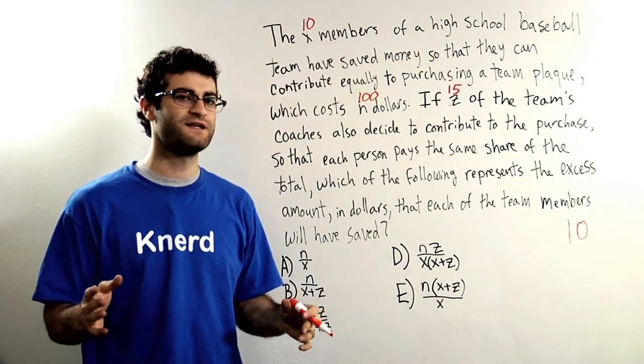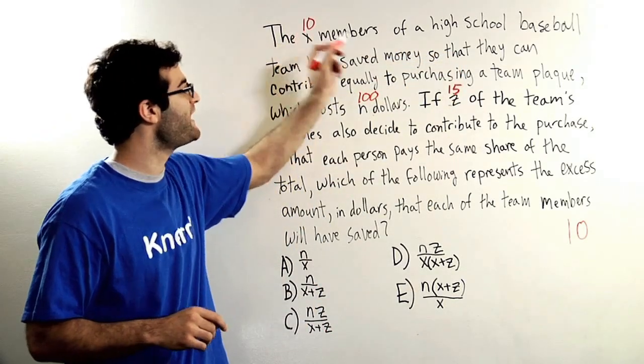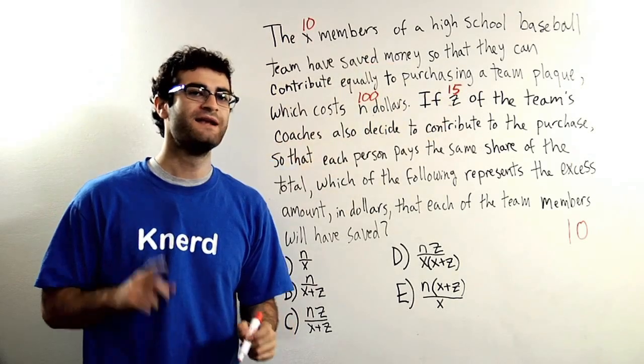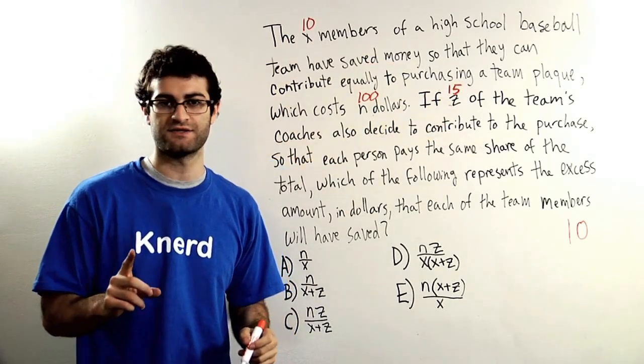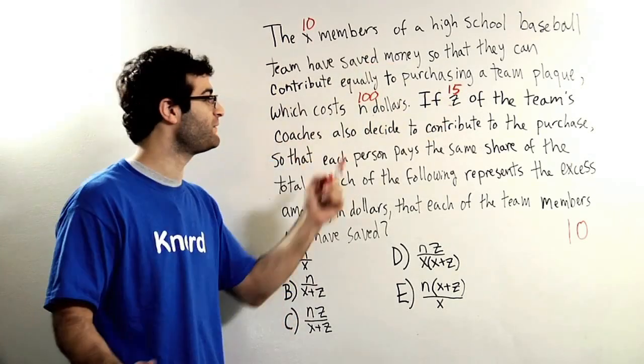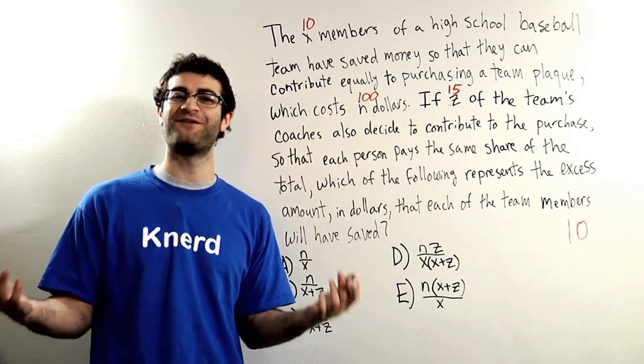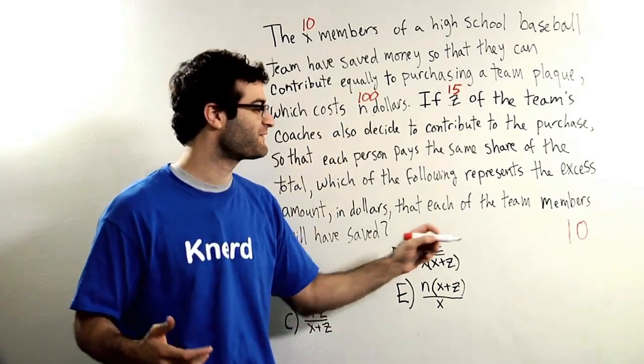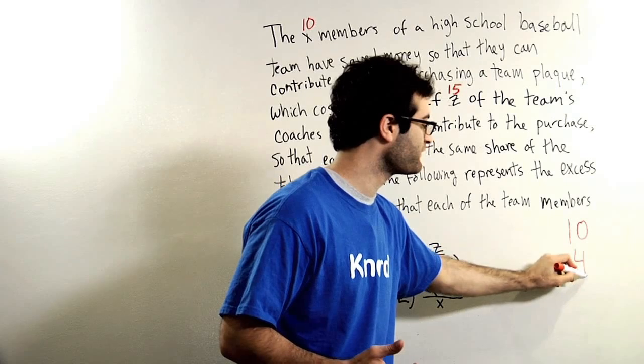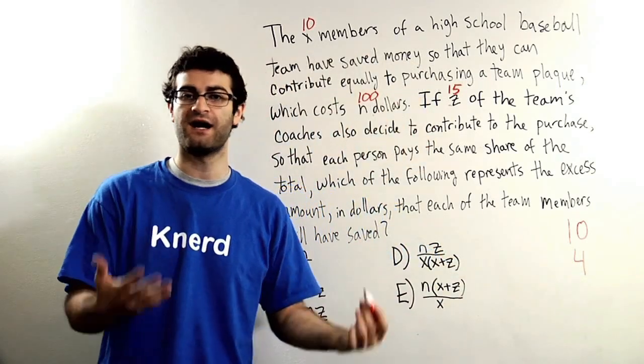Now why did I choose 15? Well, it means that there are a total of 10 plus 15 people now contributing to this $100. 25 people contributing to $100. Oh, very nice. That means that each person is contributing $4 because if there's 25 people splitting 100 equally, it's going to be 25 times 4 is 100.